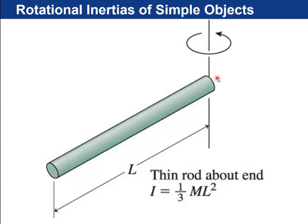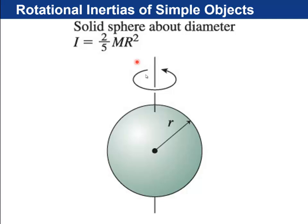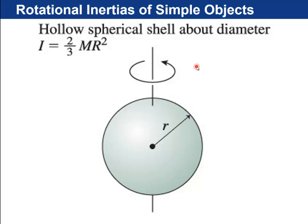From the table: a hoop has I = MR²; a solid disc (more mass near the center) has I = (1/2)MR²; a solid sphere has I = (2/5)MR²; and a hollow spherical shell like a ping-pong ball has I = (2/3)MR², which is larger than 2/5 because more of that mass is further away from the axis.